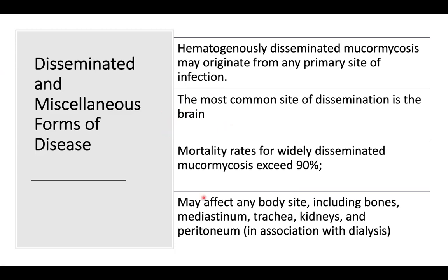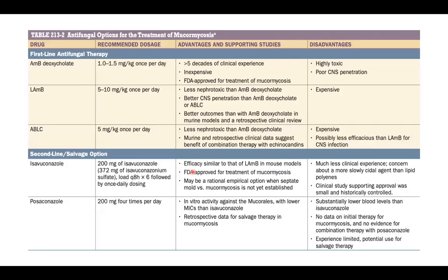Other body sites that may be affected in disseminated mucormycosis include bones, mediastinum, trachea, kidneys, and peritoneum — particularly in patients on peritoneal dialysis. The mortality rate of disseminated mucormycosis can exceed 90%, making this a critical red flag both clinically and for your exams.